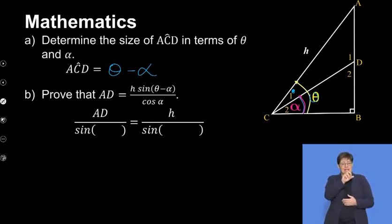The second question wants us to prove that AD equals h sine(theta minus alpha) over cos alpha. Because we want to find AD, we're going to examine the drawing first. We've got to look at both triangles and see what information we have.